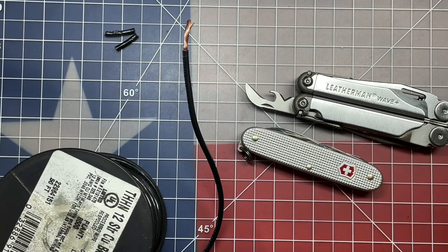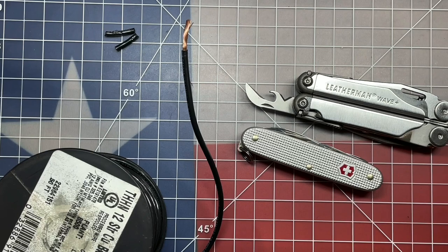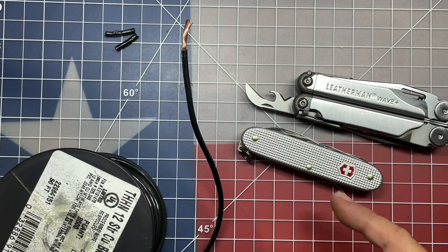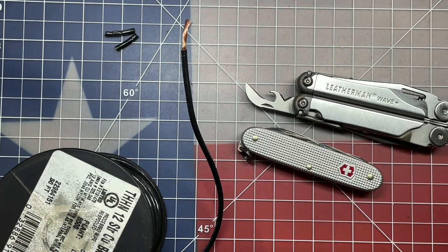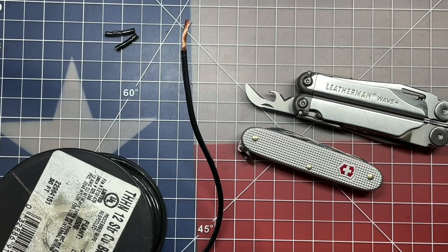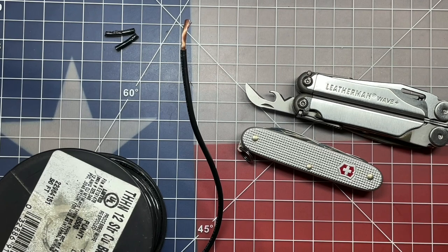This is especially useful information to have if you have a Victorinox knife that doesn't include a pair of pliers, because it would probably be easier on those models that do include pliers just to pull the pliers out, give it a little twist, and pull it off. But the wire stripping functionality, when used in that way, works pretty well, actually.